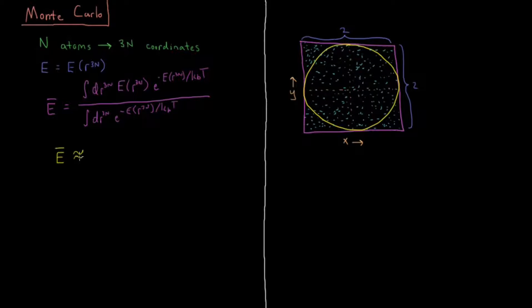So in this we would say that the energy is approximately sum over n individual states of e to the minus energy of that state divided by kT divided by sum over i equals 1 to n e to the minus i over kT, the partition function over those given states.